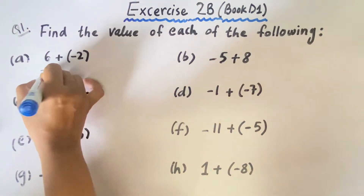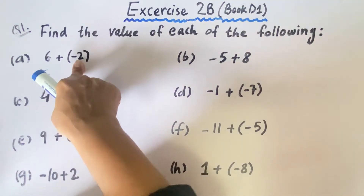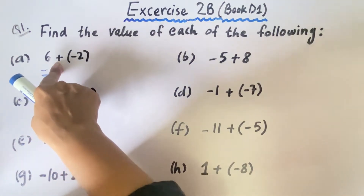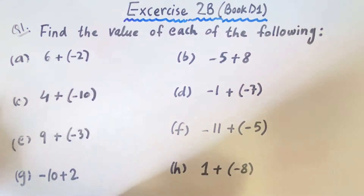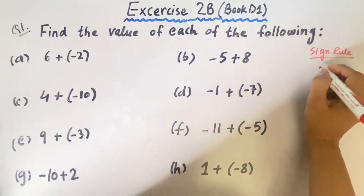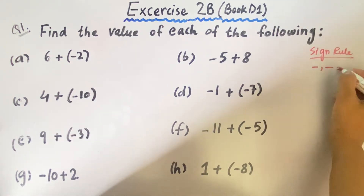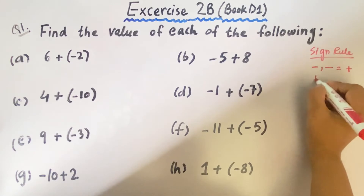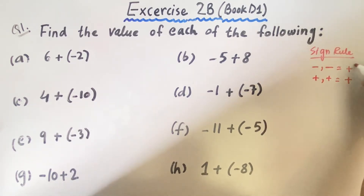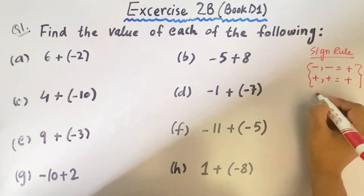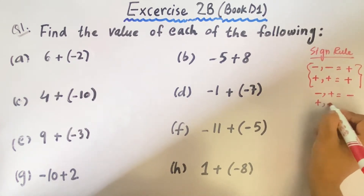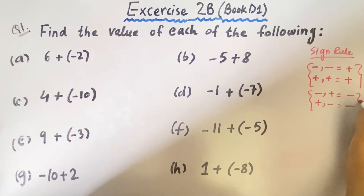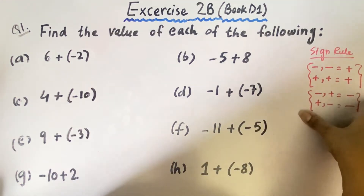In the first question, positive 6 and negative 2 are given, and along with it we have a positive sign in between these 2 numbers. Before solving, you need to keep in mind the sign rules. Sign rule says: when we have 2 negative signs, the answer will be positive — minus, minus equals plus. Same when we have 2 positive signs, the answer will be positive. When we have opposite signs, like minus plus or plus minus, the answer will be minus. So opposite sign gives a negative answer and same sign gives a positive answer.